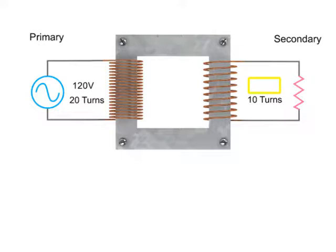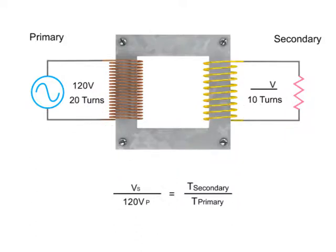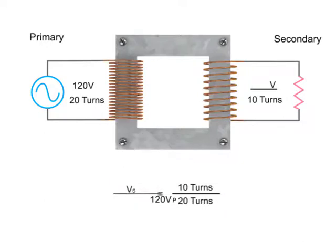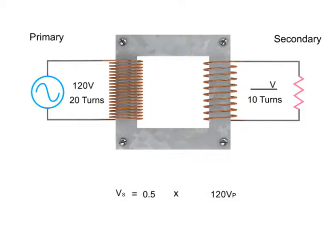we can use a simple ratio formula. This formula simply states that the secondary voltage to primary voltage ratio is the same as the secondary coil to primary coil turn ratio. Rearranging the formula and then dividing 10 turns by 20 turns, we get 0.5 multiplied by 120V. This results in a calculated step down voltage of 60 volts.